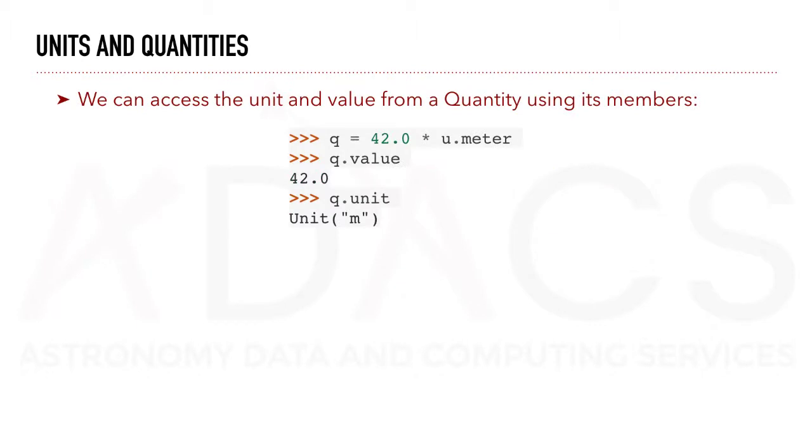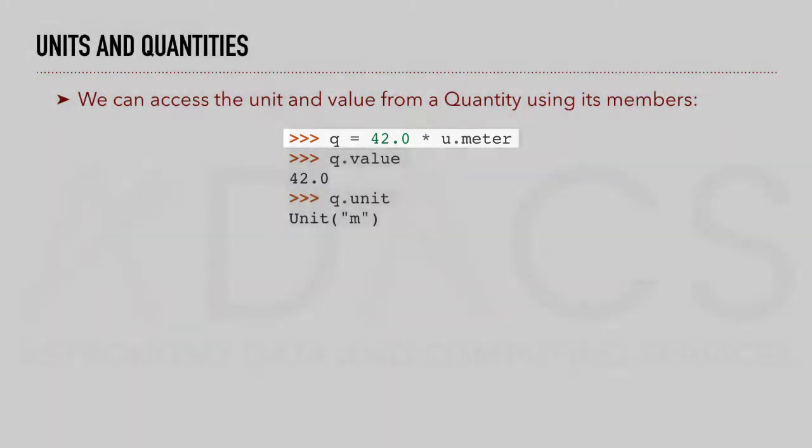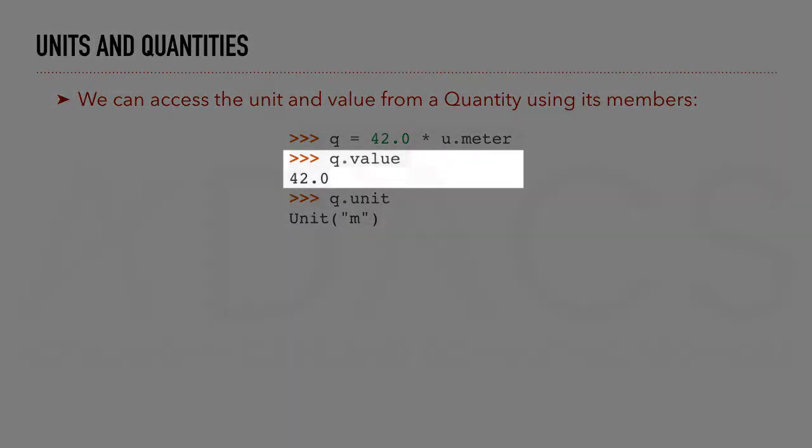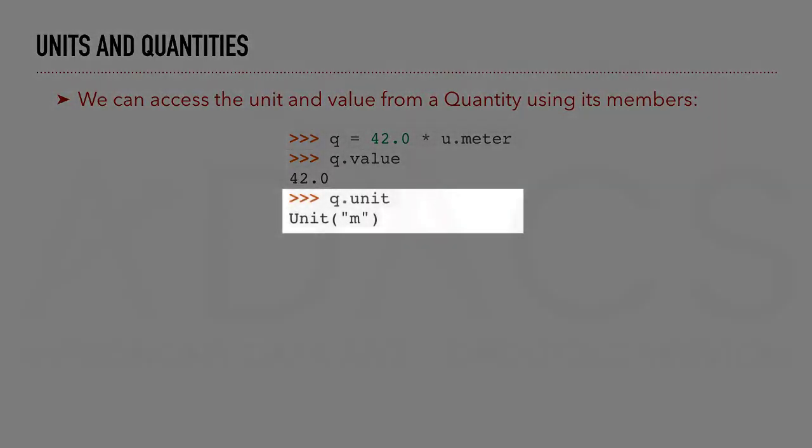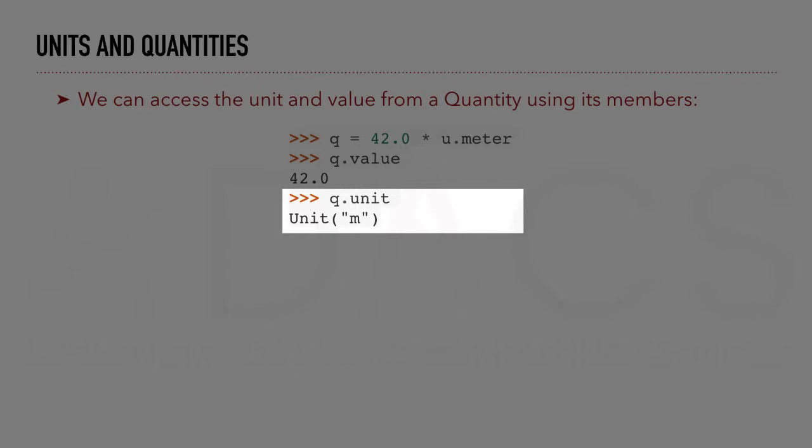We can access the unit and value from a quantity using its members. For instance, here, q is the quantity 42 meters. If we want to have the value, we do q.value, which returns 42, and q.unit returns the unit meters.